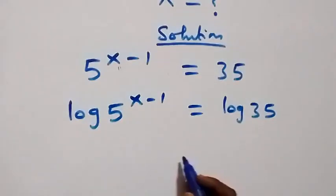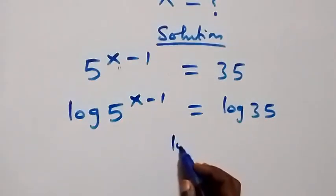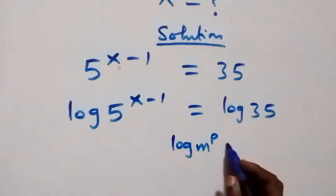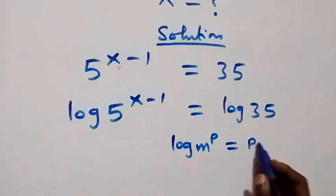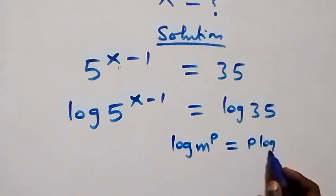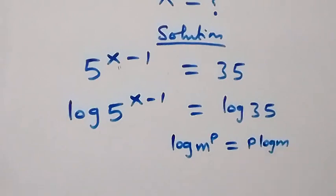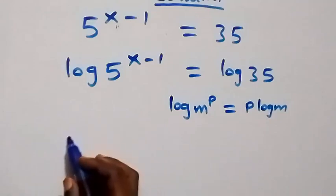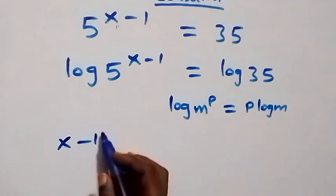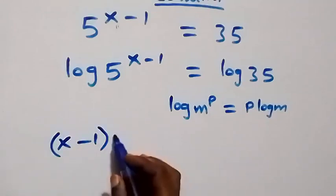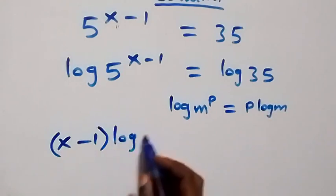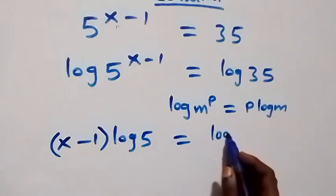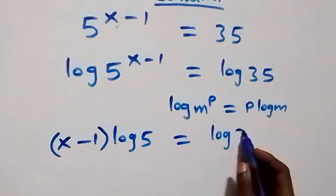Next, we apply the power rule of logarithm. From log m raised to power p equals p log m, the power here is x minus 1. So we have x minus 1 multiplied by log 5 equals log 35.